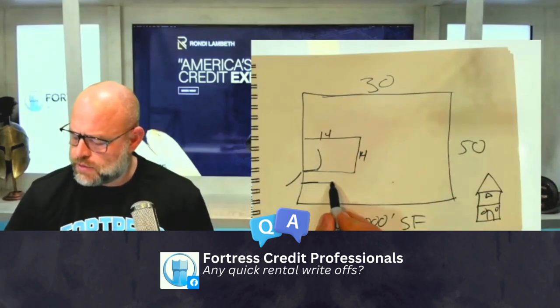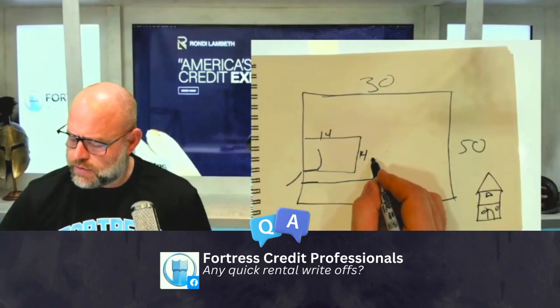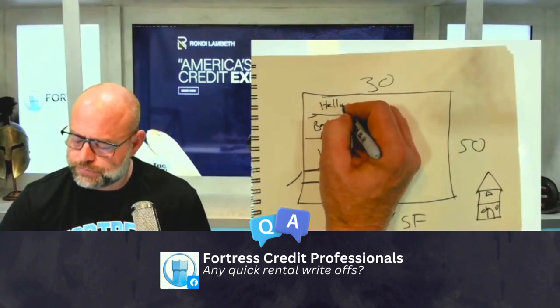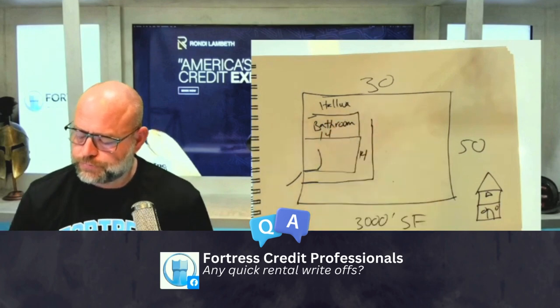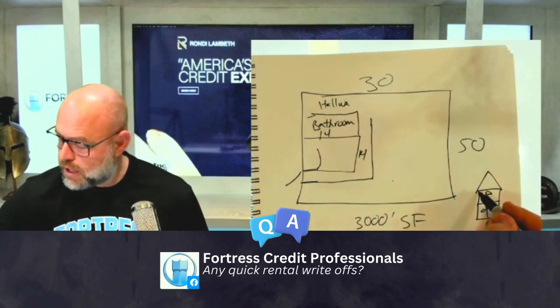And then this was the three-foot hallway, and then you go down this hallway and right here was a bathroom. I know it's not to scale, but then this was a hallway to the garage, because there was a garage right here.